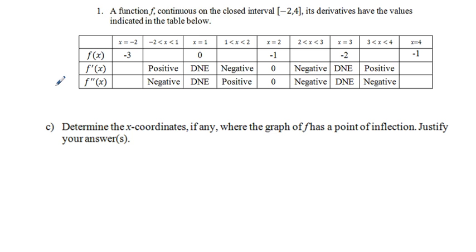Okay, our last part we're going to look at is part C. Same table, this time determine the x coordinates, if any, where the graph of f has a point of inflection, justify your answer. Well really, this is just what we did in part B. We have f double prime above, we have f below, and your critical numbers would be 1, 2, and 3.